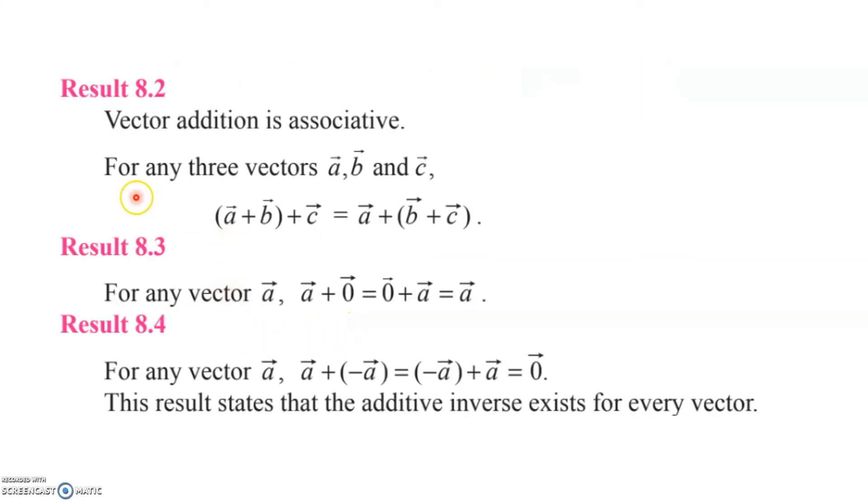We can also derive three more results. The first is that vector addition is associative, which means if a, b, and c are three vectors, (a+b)+c equals a+(b+c).